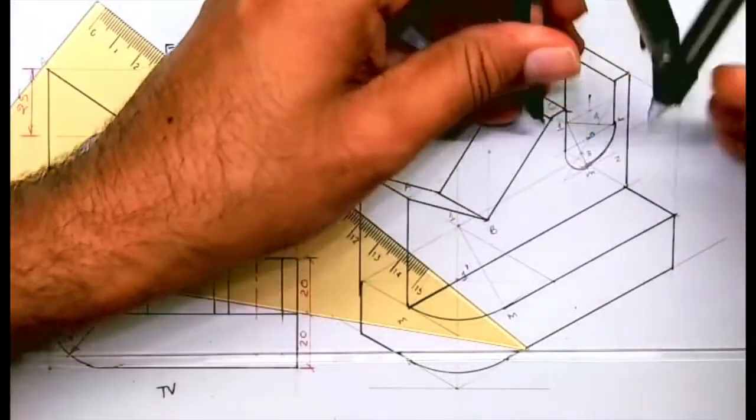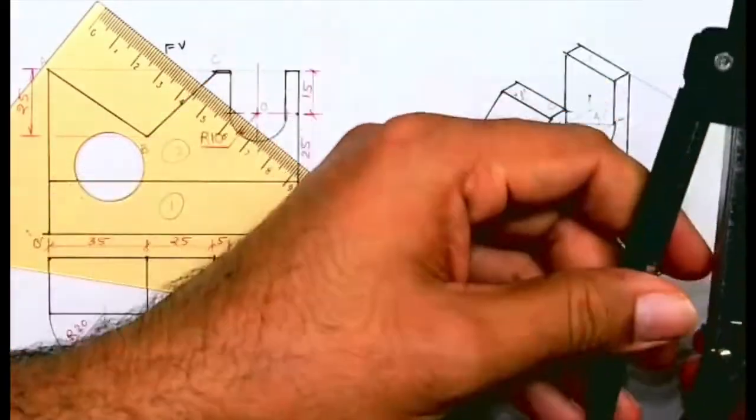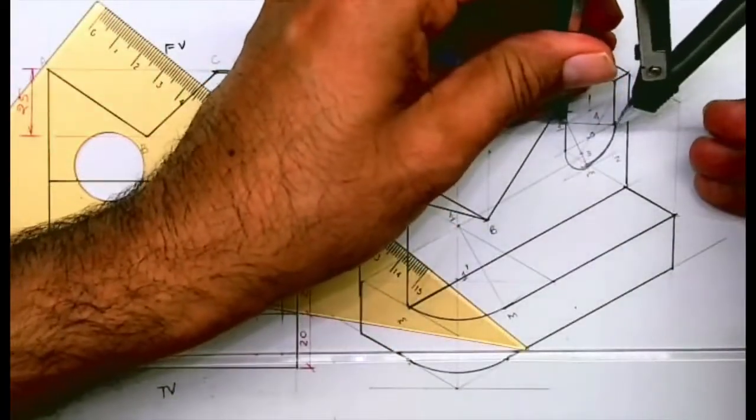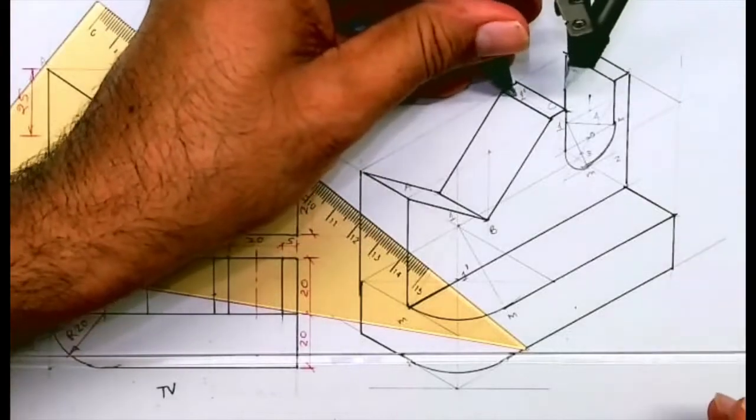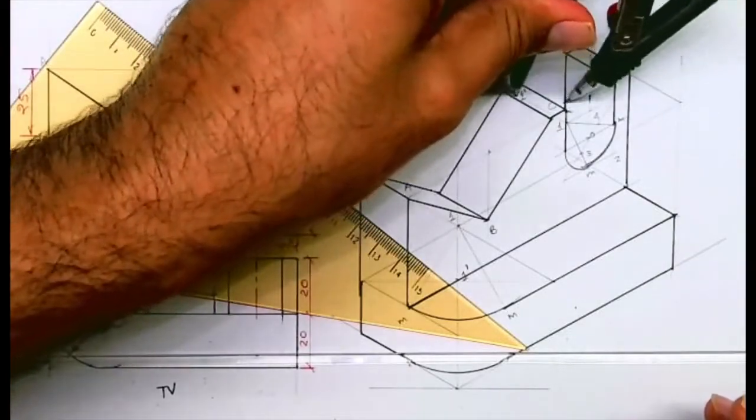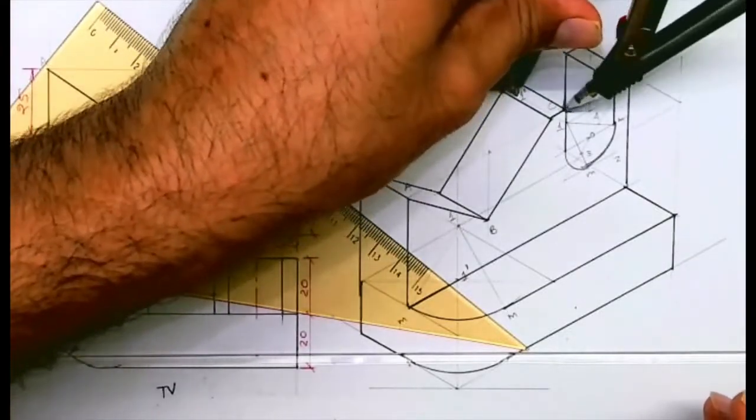Then you take one to M and draw the arc from one dash. Hardly you'll be able to see it.